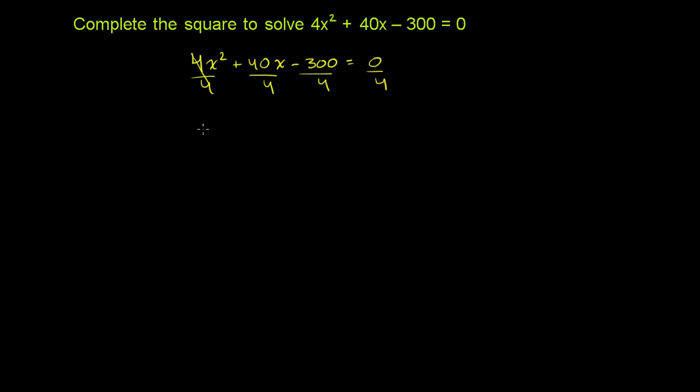So this will simplify to x squared plus 10x. And I can obviously do that, because as long as I do whatever I do to the left-hand side, I also do to the right-hand side. That will make the equality continue to be valid. So 40 divided by 4 is 10x. And then 300 divided by 4 is what? That is 75.